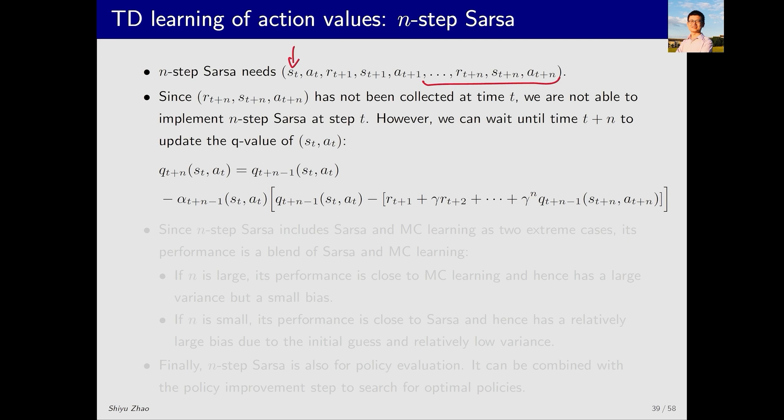Understanding this makes it clear that N-step SARSA is somewhat similar to Monte Carlo methods. Monte Carlo learning requires waiting until the end of the episode to update with all the data. This is why Monte Carlo learning is considered an offline method. N-step SARSA is neither strictly offline nor strictly online. It is a special type of online method. This is because we need to wait until time T plus N to update QT plus N for ST, AT. The left side is QT plus N and the right side is QT plus N minus 1 minus alpha times QT plus N minus 1. This is the corresponding TD target. Once we have all the necessary samples, we can implement this technique.